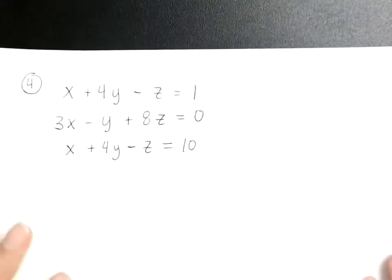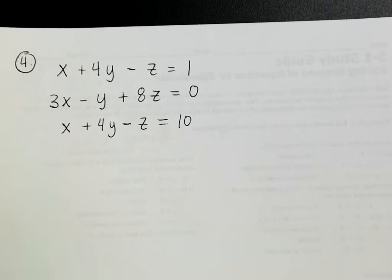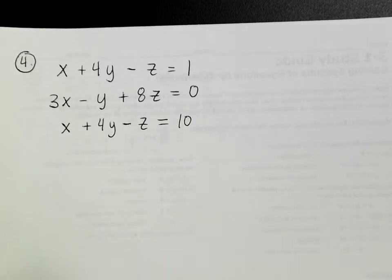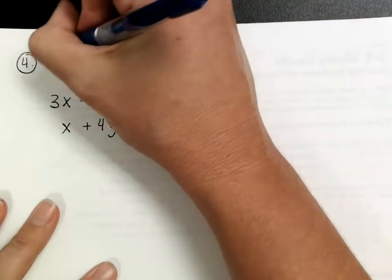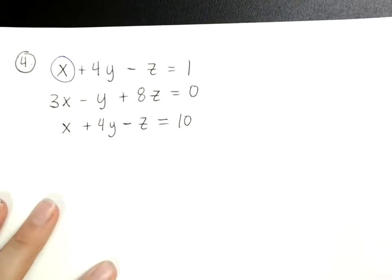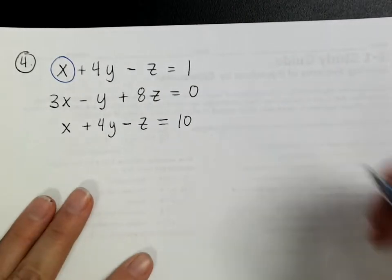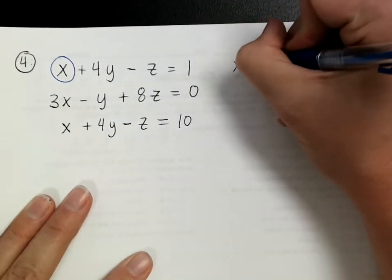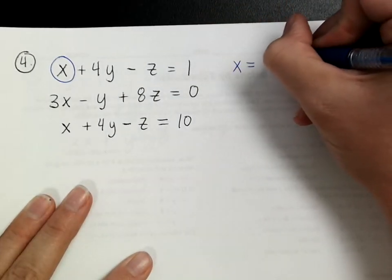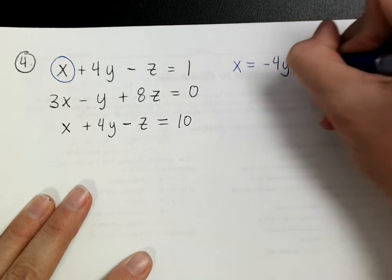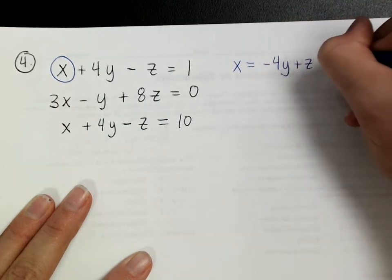Question 4 is the first time that all three equations have all three variables. It doesn't matter which variable you choose to solve for — it's completely up to you. I'm going to solve for x in the top equation, which gives x = negative 4y + z + 1.